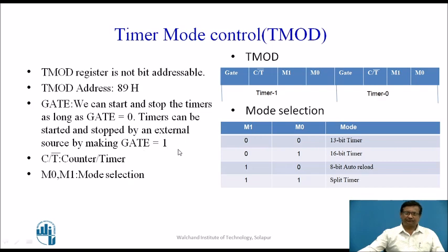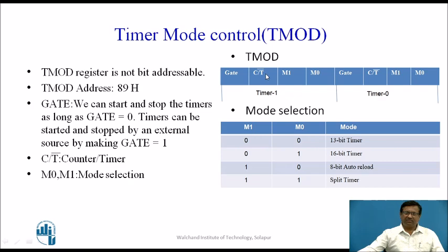If you want to start and stop the timer by an external event, Gate must be 1. If Gate is 0, internally only we are controlling the timer operation. If Gate is 1, an external signal is controlling the start and stop of the timer. The C/T-bar bit is the counter or timer select bit. If this bit is 1, we are using the timer as a counter. And if it is 0, we are using it as a timer.